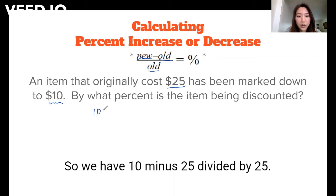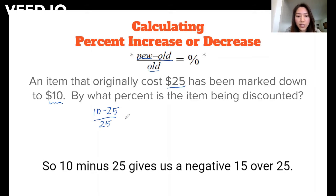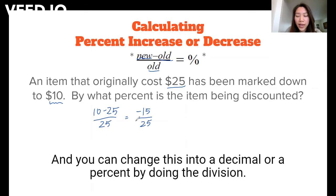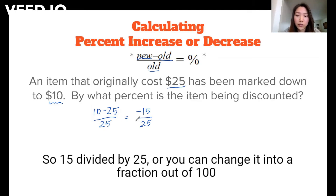So we have 10 minus 25 divided by 25. So 10 minus 25 gives us a negative 15 over 25. And you can change this into a decimal or a percent by doing the division, so 15 divided by 25.